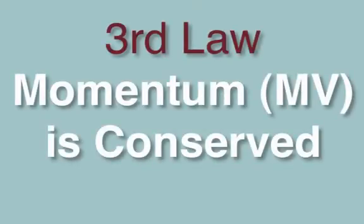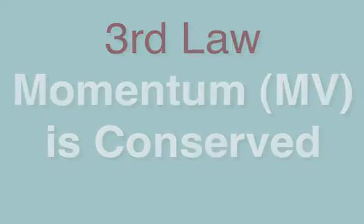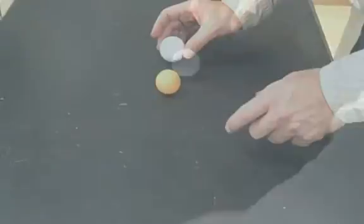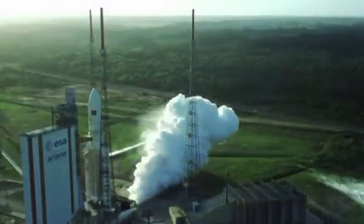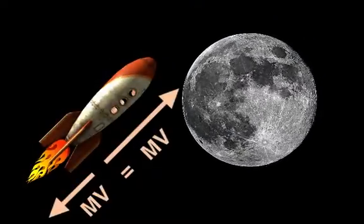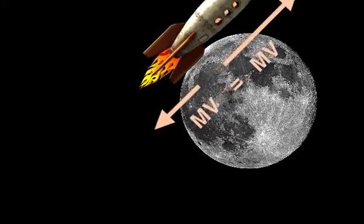Third law: the momentum of a closed system is conserved. An example on this third law is that the momentum before an impact equals the momentum after the impact, or the momentum of rocket fuel going out in a rocket equals the momentum of the rocket moving out to space.